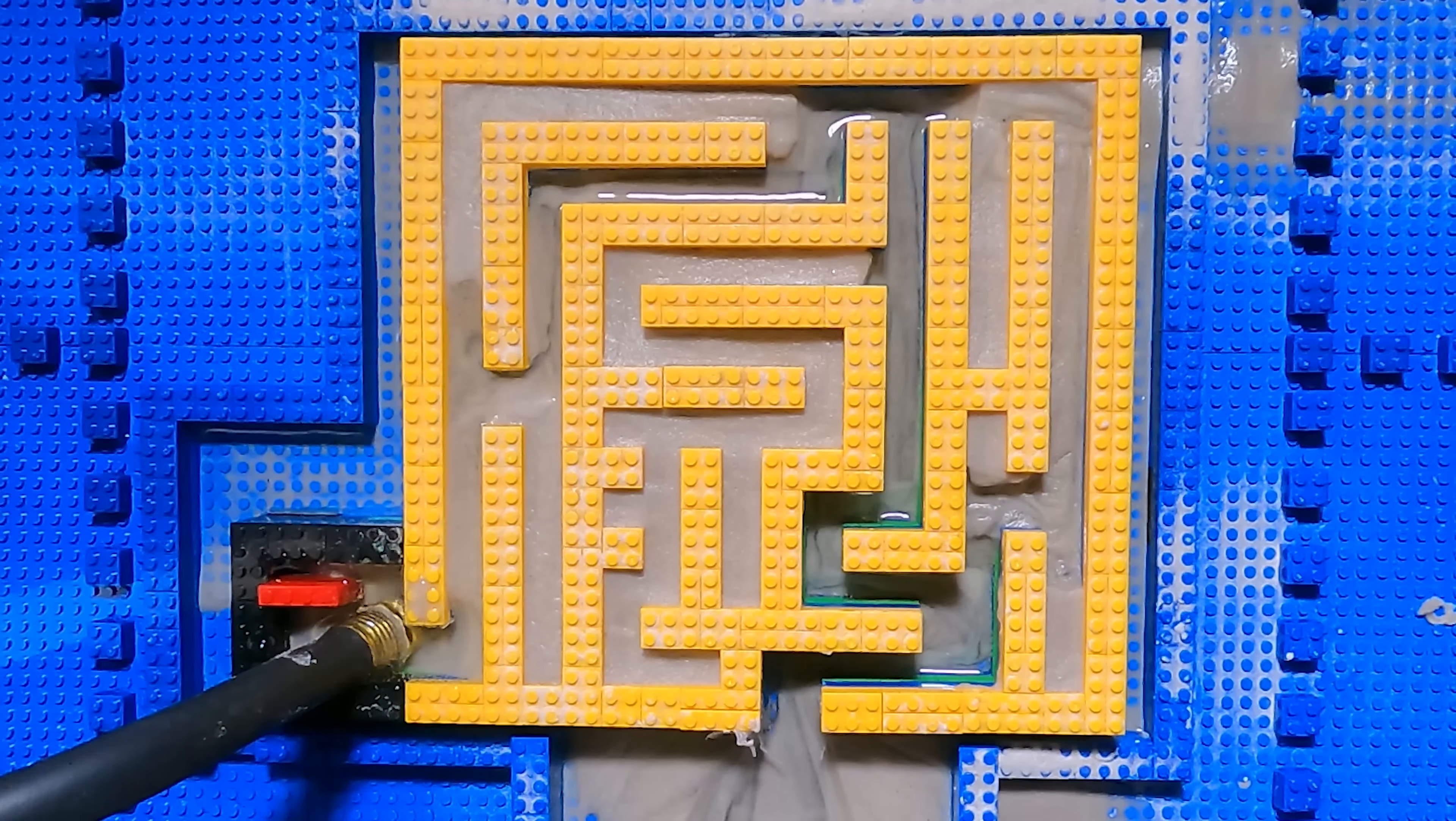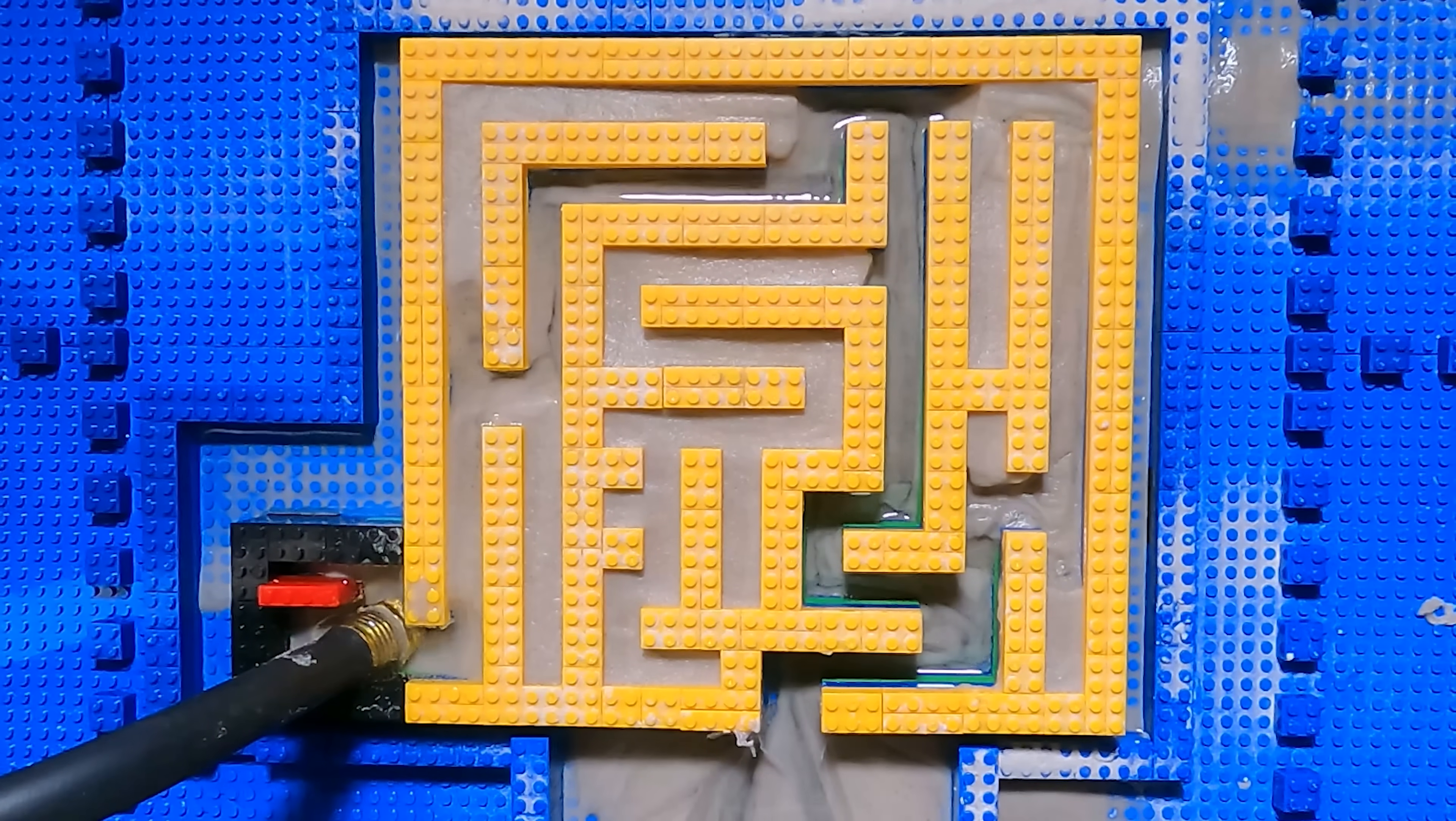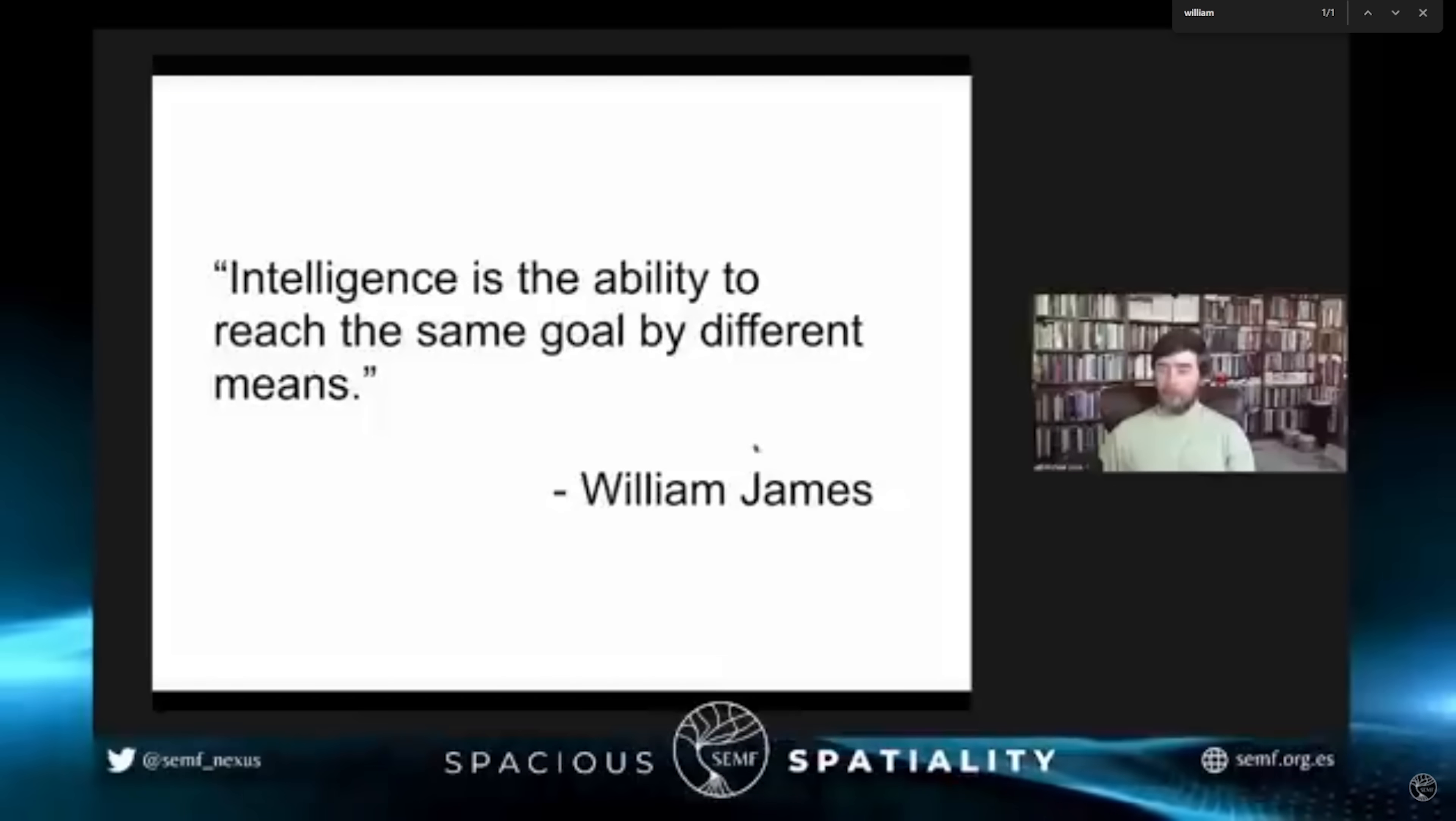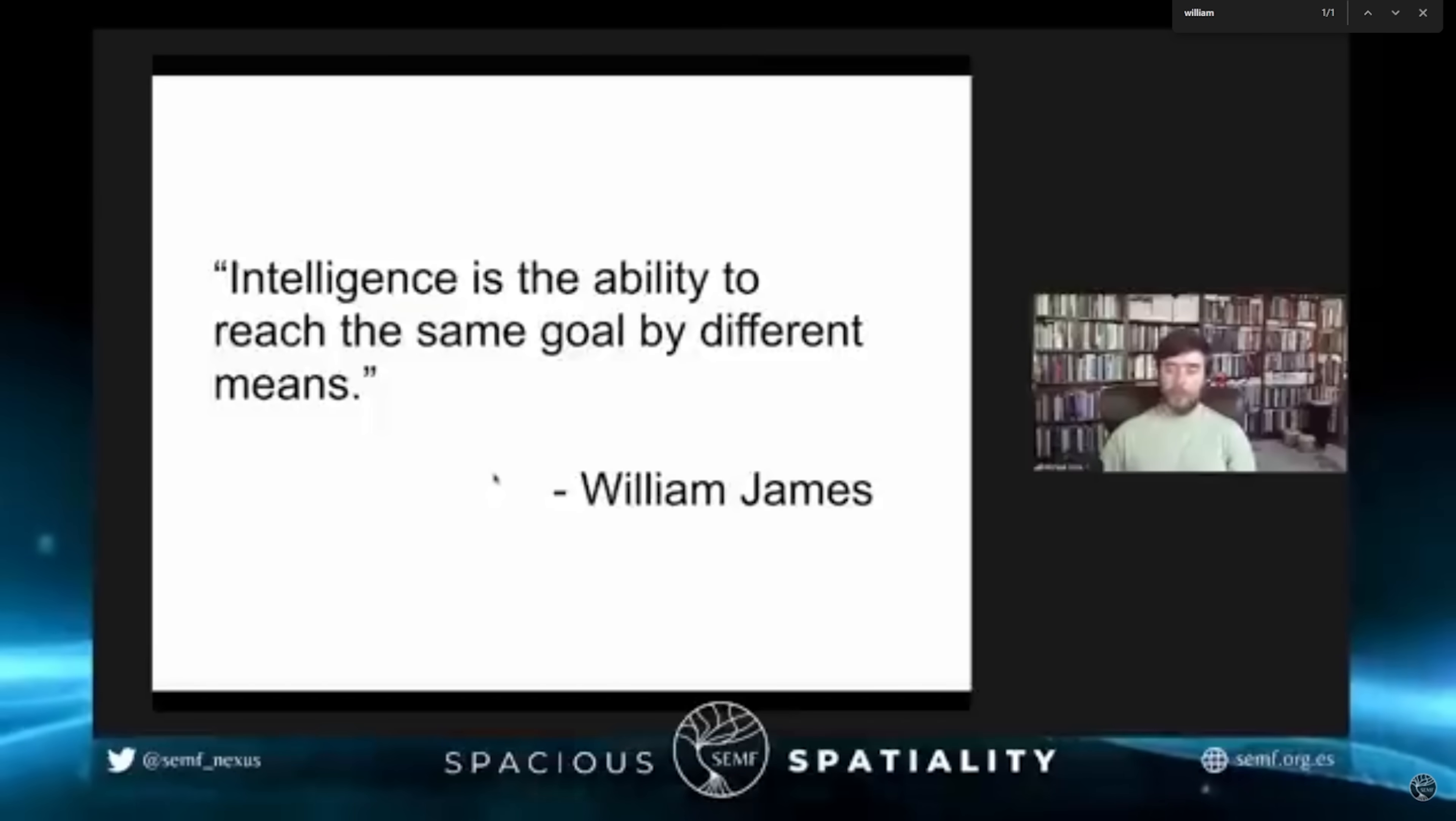Tap water fits that definition. It's always trying to go downhill. If you block its path in one spot, it will find another. Now, here's the thing about words, definitions of words. You can define any word any which way you want. Words are made up. If you want, you can define intelligence this broadly, but I think that if we have a definition that's that broad, a definition so broad that it can't tell the difference between Einstein and tap water, well, the word no longer means anything at all.